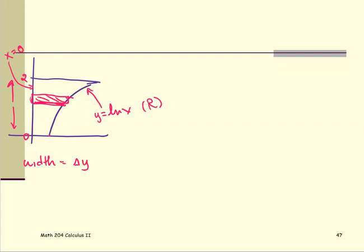For the entire region, the interval of integration in y goes from 0 to 2. When integrating with respect to y, rewrite the original function in terms of y. The function y equals ln x becomes x equals e to the y. This is because natural log is log base e, so solving for x gives x equals e to the power y.